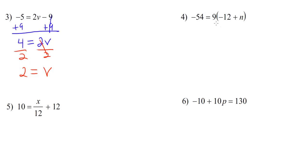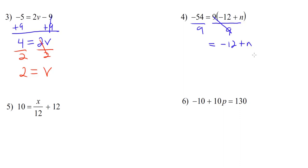Number 4: negative 54 equals 9 times (negative 12 plus n). This is just like number 2. We have the distributive property, but to keep this a 2-step, we're going to get rid of this 9. Since 9 is multiplying the parentheses, the way we're going to get rid of it is by dividing both sides by 9. On the right, the 9s cancel out, leaving us with negative 12 plus n. And on the left, negative 54 divided by positive 9 is negative 6.